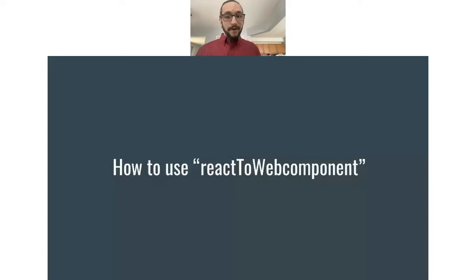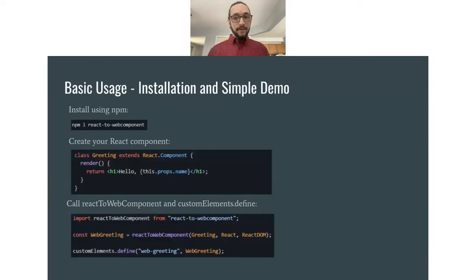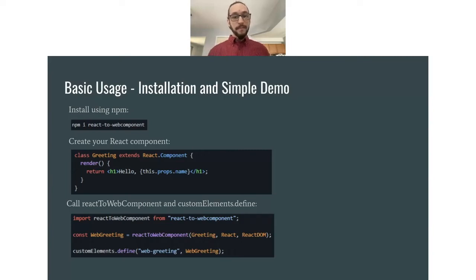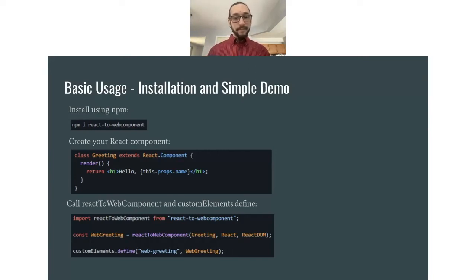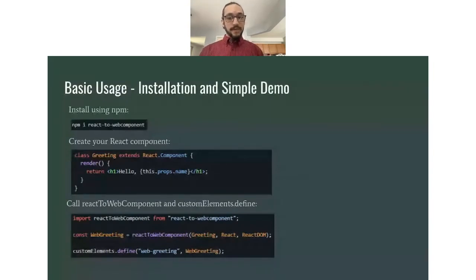Now that we know what React to Web Component is, we can talk about how to use it, starting with basic usage. This is all from the readme, so you can easily follow along or revisit this on the GitHub page. You would install using npm — simply `npm install react-to-webcomponent`. You then create a React component. In this example, we have a greeting component that renders an h1 tag with the text 'hello' and uses `this.props.name` to display the name property value.